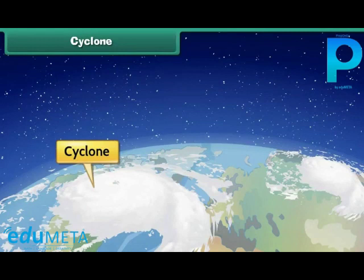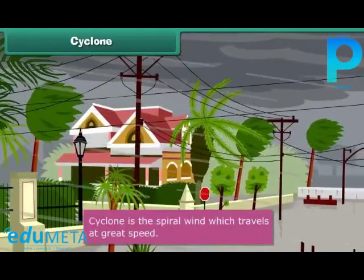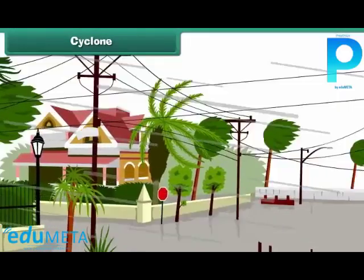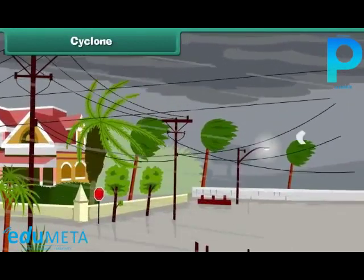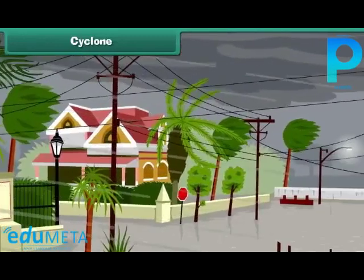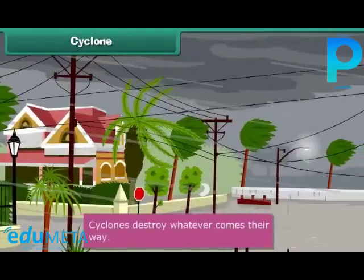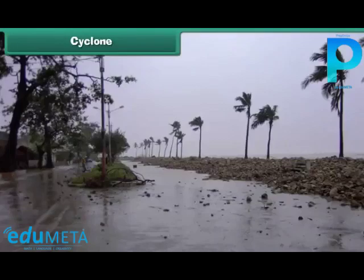Cyclone. Do you know what a cyclone is? In the case of cyclones, the spiral wind travels at great speed. Strong winds travelling at very high speed uproot trees, houses, and electric poles, destroying everything in their way. Cyclones occur specially in coastal areas.